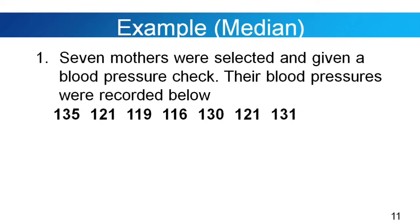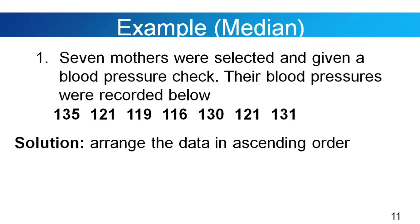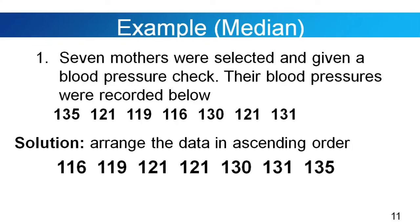Let's go to example number 1. Seven mothers were selected and given a blood pressure check. Their blood pressures were: 135, 121, 119, 116, 130, 121, and 131. Arranging in ascending order: 116, 119, 121, 121, 130, 131, 135. Since our data set has an odd number of values, the middlemost value is 121. So the median is 121.